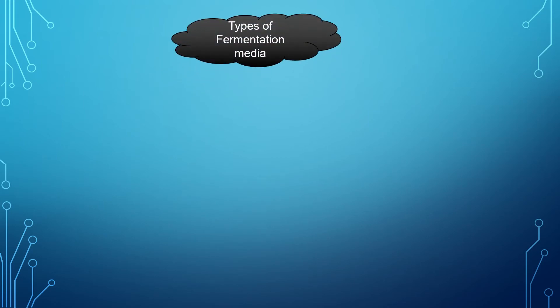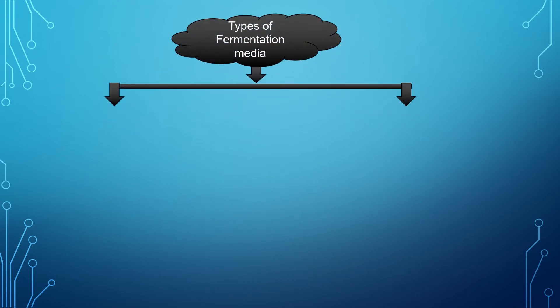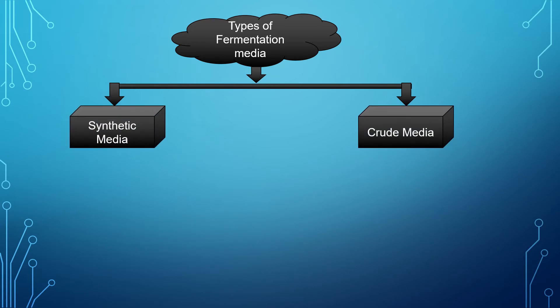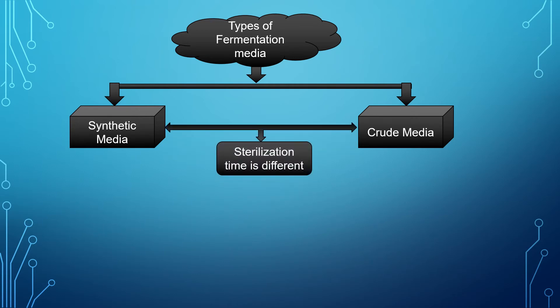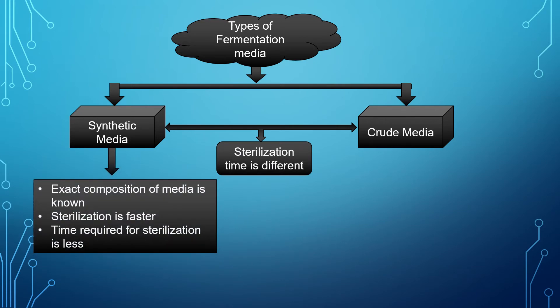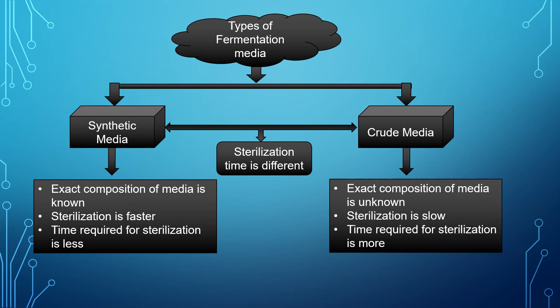Now, types of fermentation media. Basically there are two types of fermentation media. First is synthetic media, and second is crude media. But the time required for sterilization of these two media is different. In case of synthetic media, the exact composition of media components is known, so sterilization takes place faster and time required is less. Whereas in case of crude media, exact composition is unknown and sterilization is slow, so time required is more.